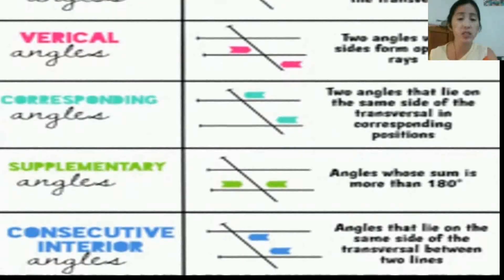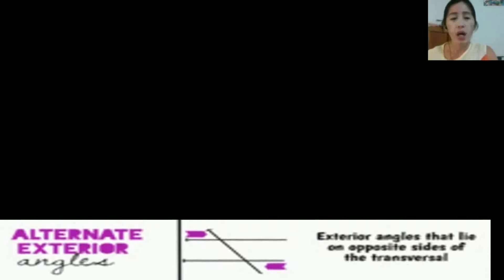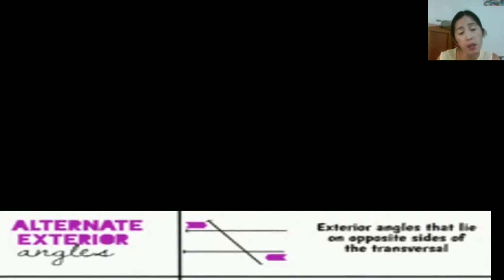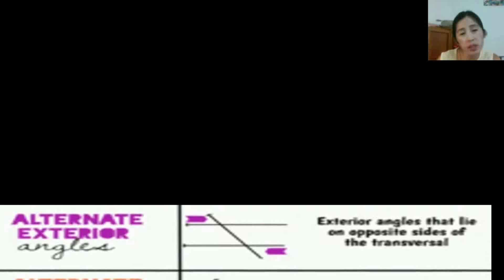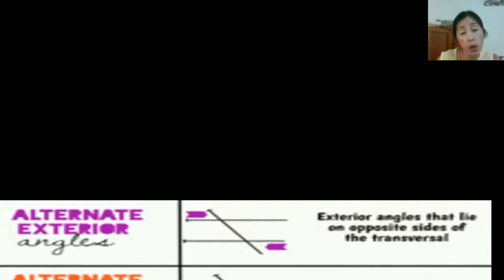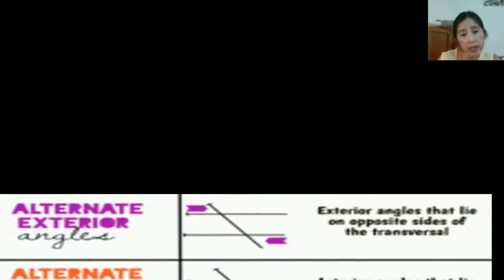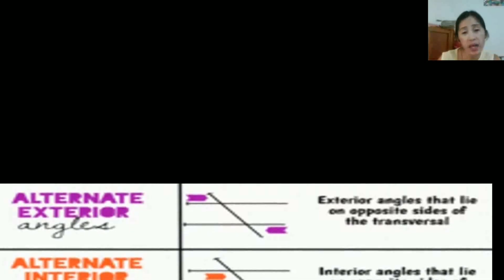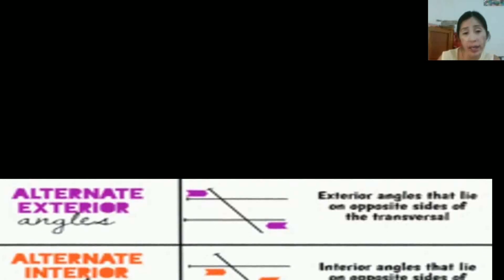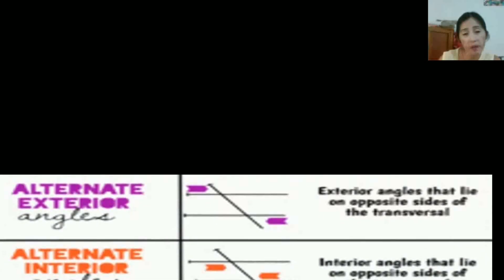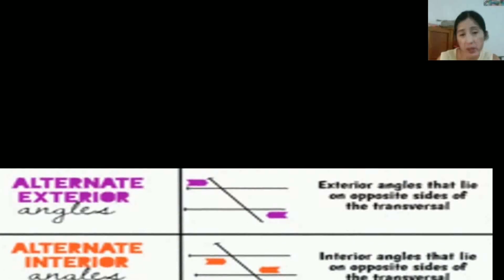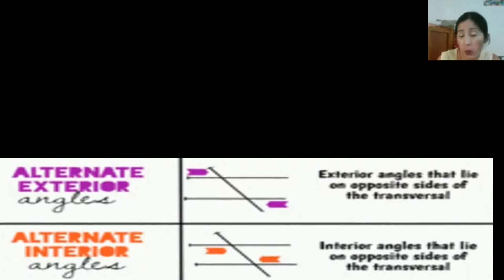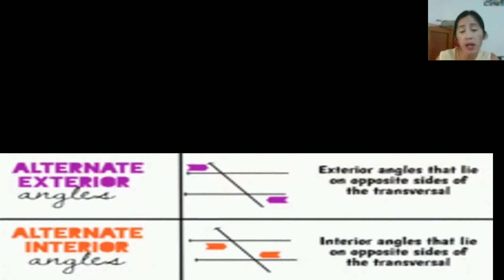Alternate exterior angles are colored purple. They are exterior angles — one is on the right, the other is on the left. The angle beside the colored angle is also an alternate exterior angle with the angle beside the second colored angle. From this figure, we can create two pairs of alternate exterior angles, and take note: they are always congruent.